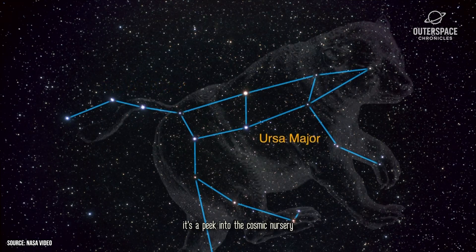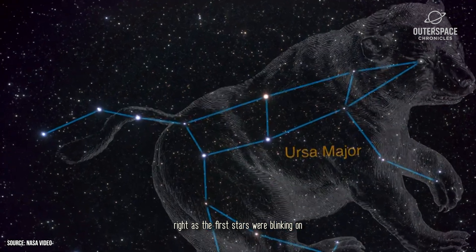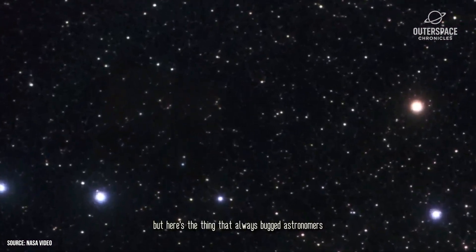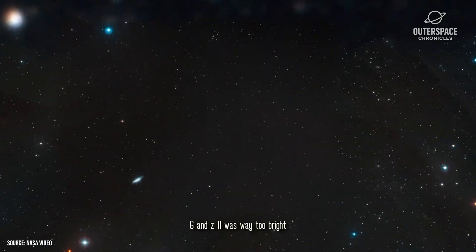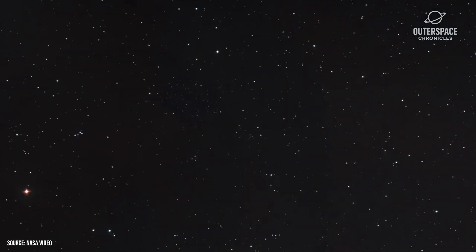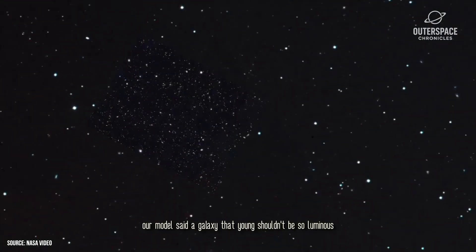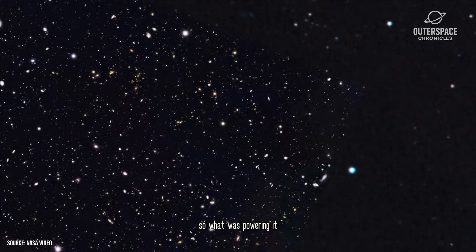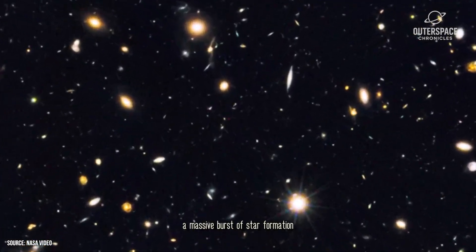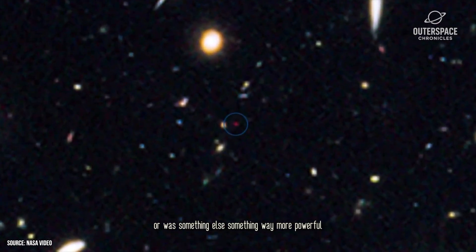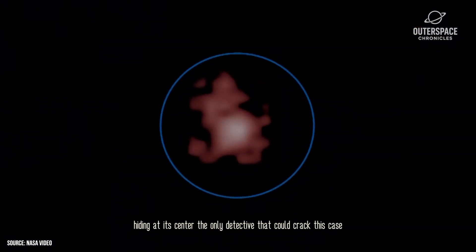It's a peek into the cosmic nursery right as the first stars were blinking on. But here's the thing that always bugged astronomers. GNZ 11 was way too bright. Our models said a galaxy that young shouldn't be so luminous. So what was powering it? A massive burst of star formation? Or was something else, something way more powerful, hiding at its center?